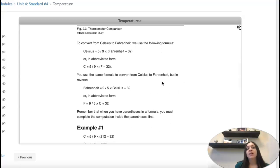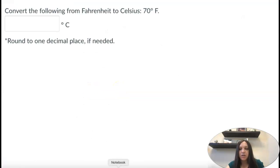So we have some formulas here. We have Celsius if we're given Fahrenheit, and then Fahrenheit if we're given Celsius. So let's do a couple examples. This one, we have convert the following from Fahrenheit to Celsius. So 70 degrees Fahrenheit would be what Celsius?